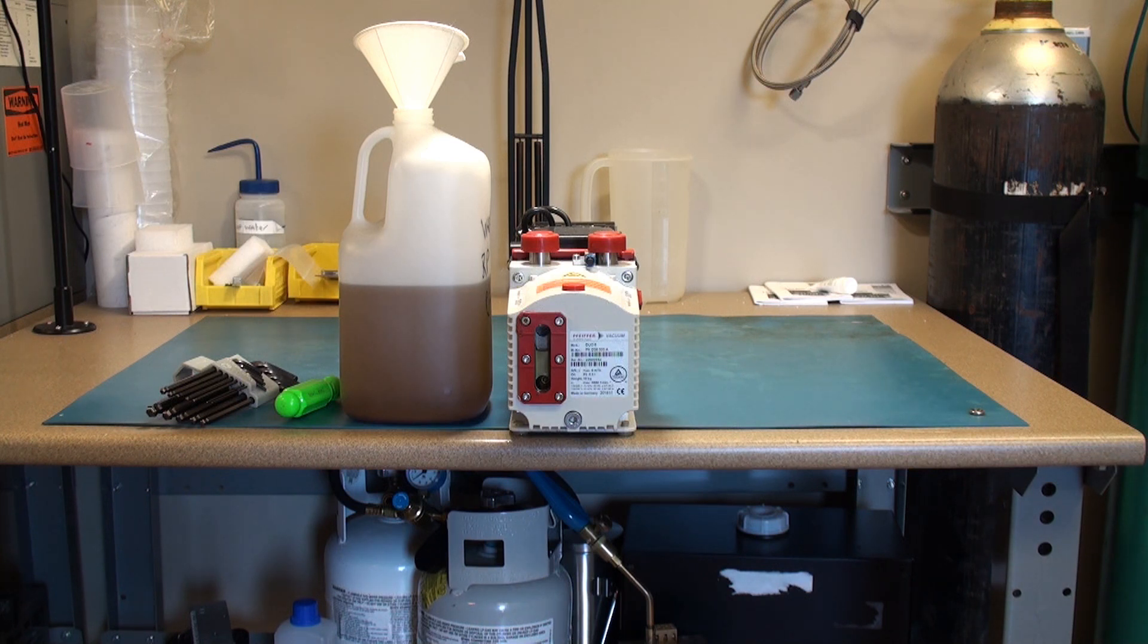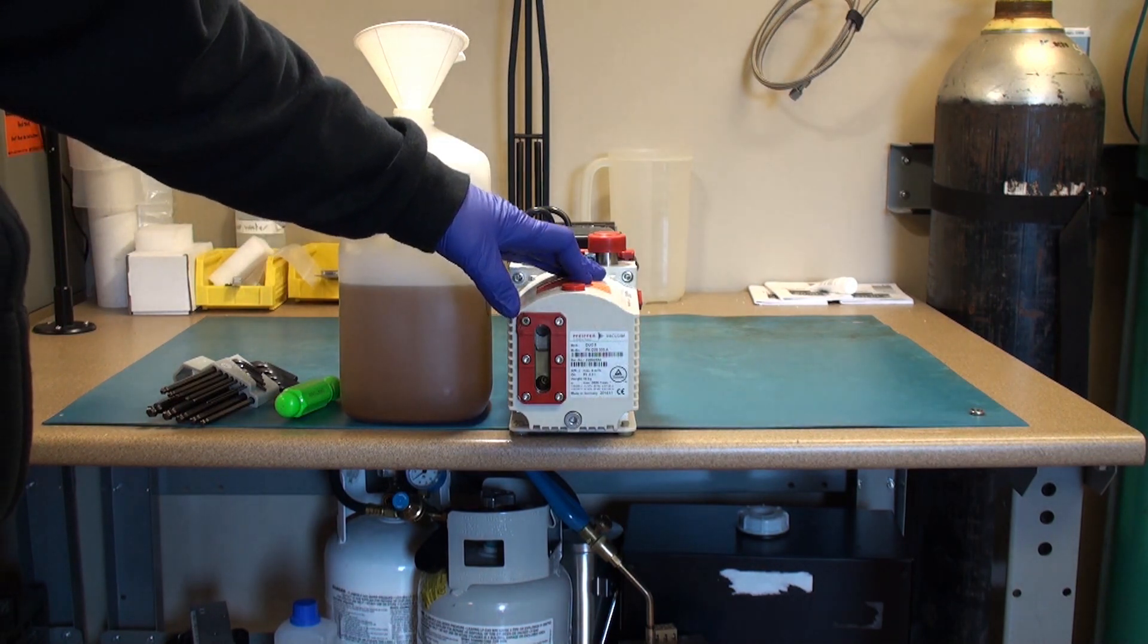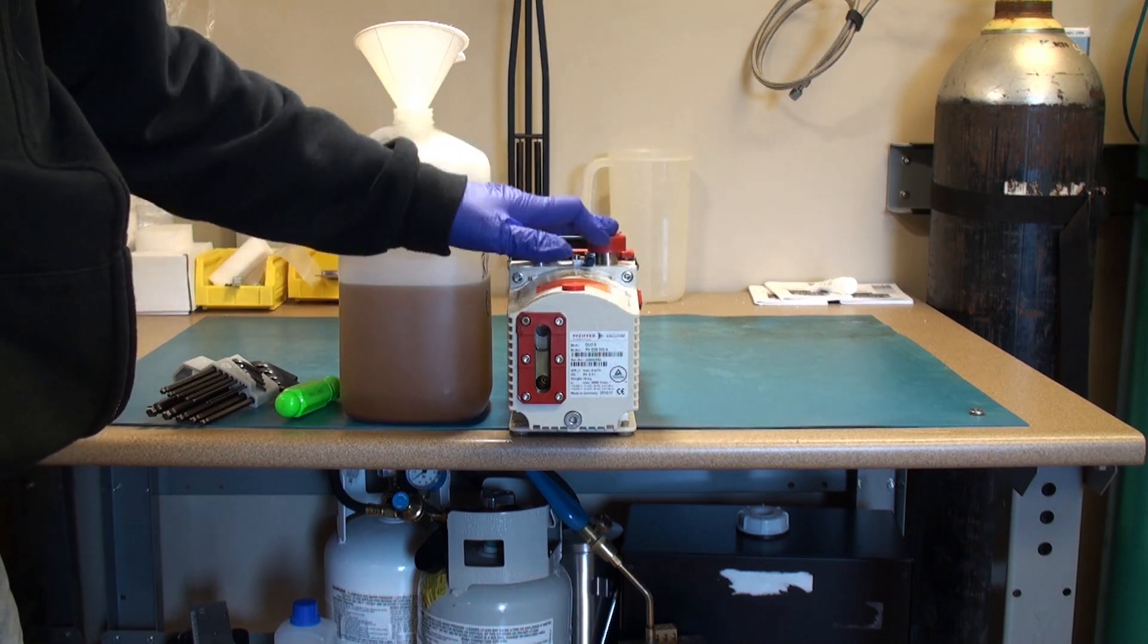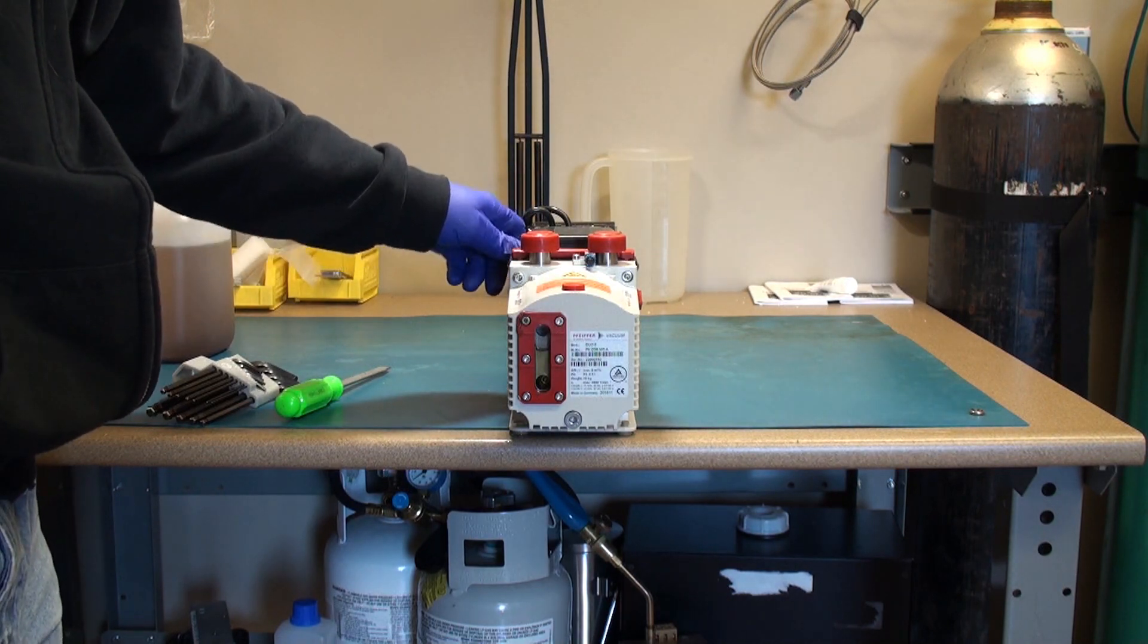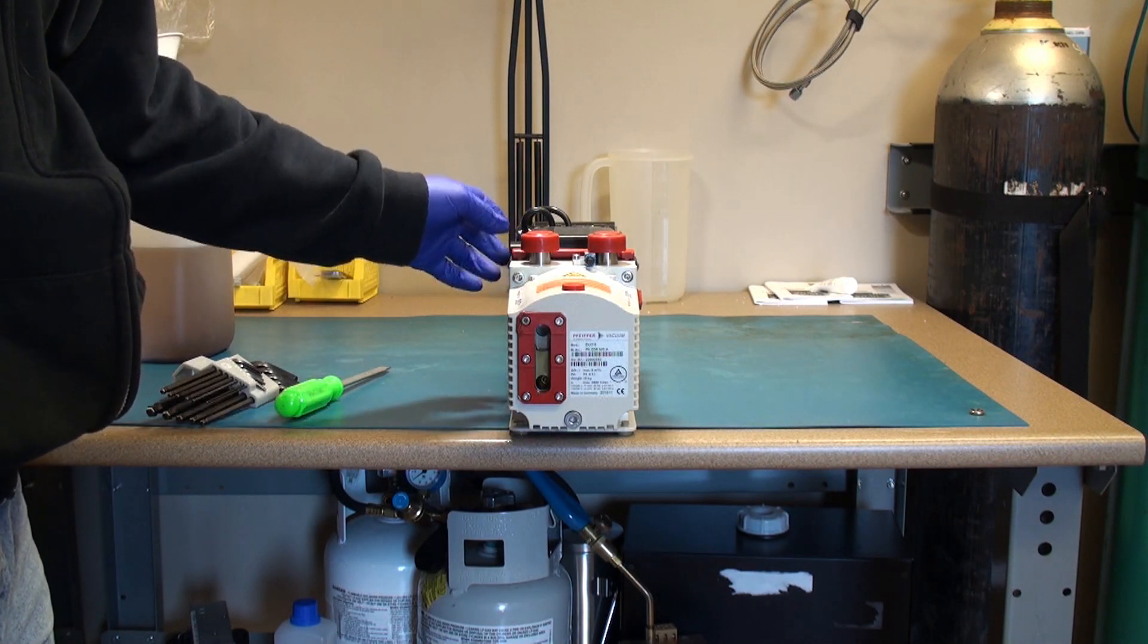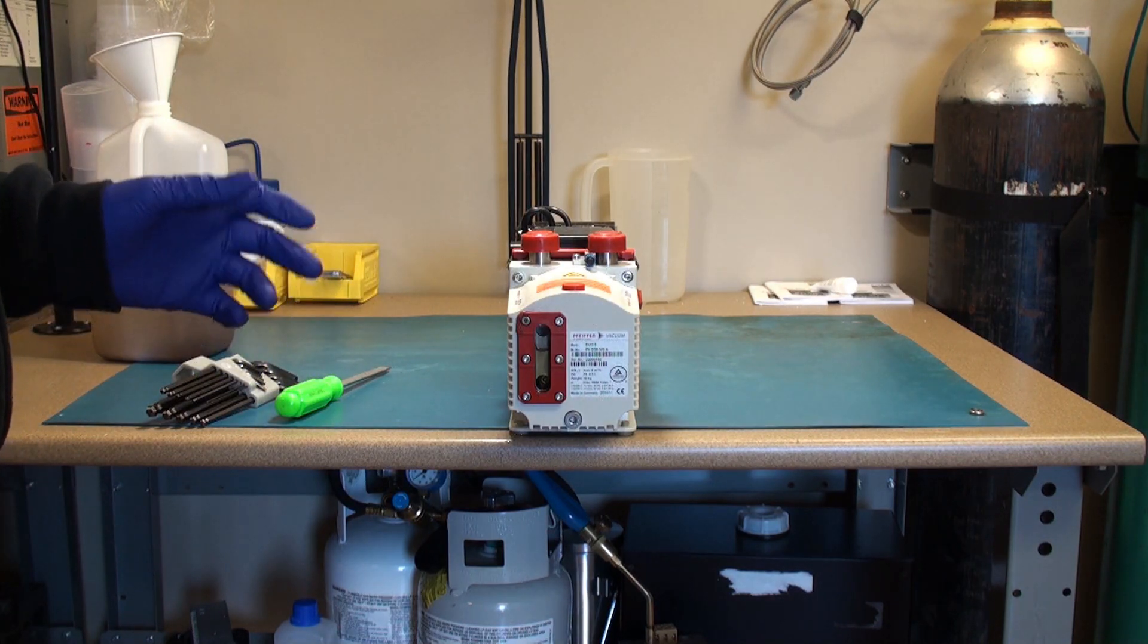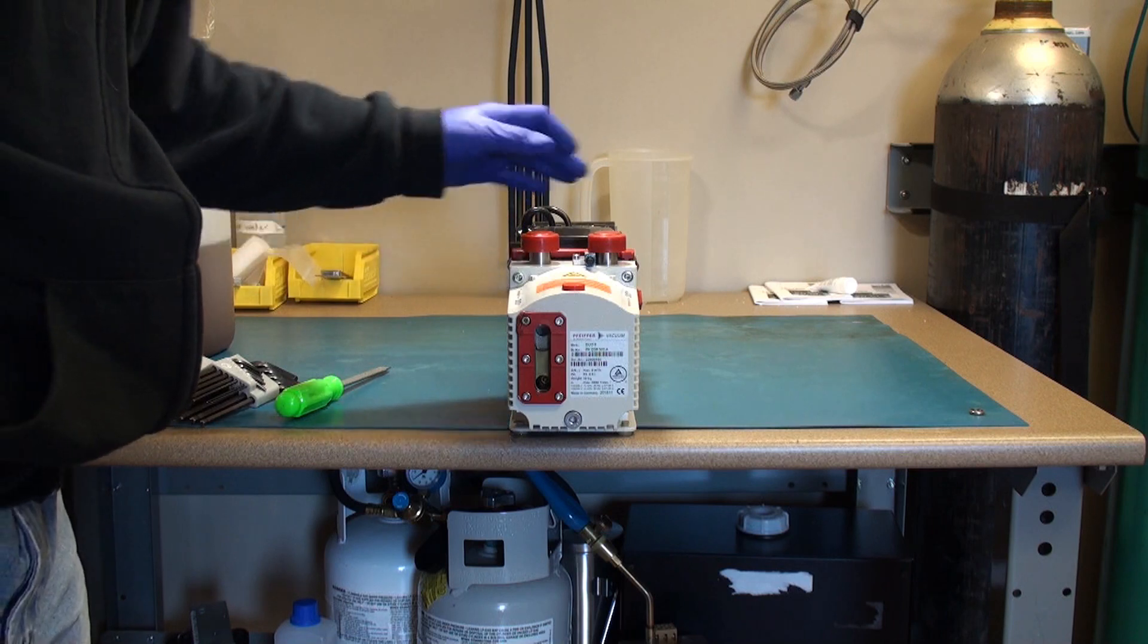The things we have here on the bench is this Pfeiffer Duo 6 rotary vane pump. It has been disconnected from its station where it normally resides near the carbon coater or sputter coater. It's unplugged, turned off.